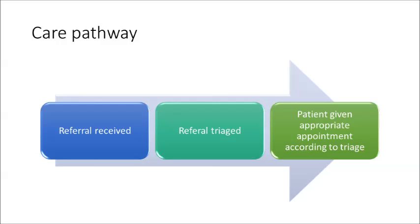In relation to this module, let's consider a service delivery model or model of care as a care pathway. All care pathways in secondary and tertiary health begin with a referral which is received and then triaged. Triaging is a process undertaken to determine the urgency for care and the appropriate clinic or service the patient needs. In some instances, the triage process determines that the patient doesn't actually require the services provided by the hospital or clinic they've been referred to, in which case the patient and/or the referring clinician are informed.